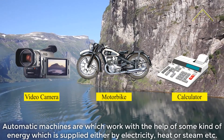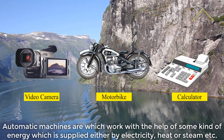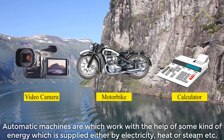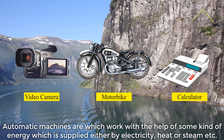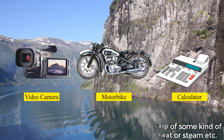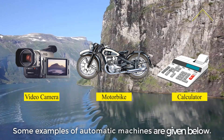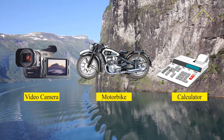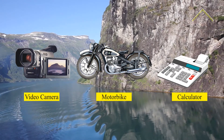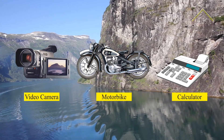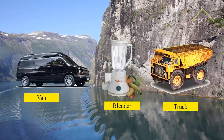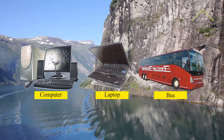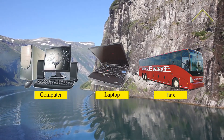Automatic Machines are machines which work with the help of some kind of energy, which is supplied either by electricity, heat, or steam. Some examples of automatic machines are given below: Video camera, Motorbike, Calculator, Van, Blender, Truck, Computer, Laptop, and Bus.